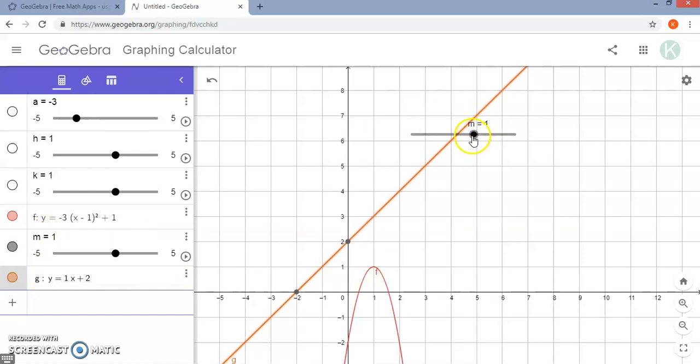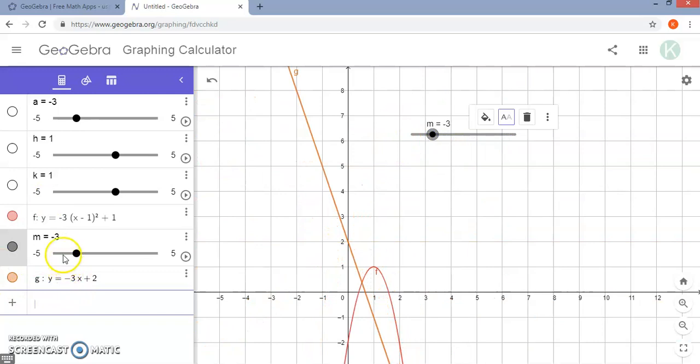I think typing in the equations with the variables there and letting GeoGebra generate the sliders on its own is more effective, more efficient, but you can use it that way.